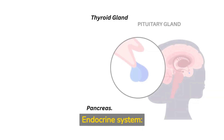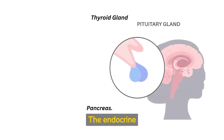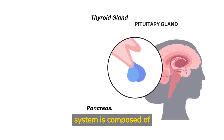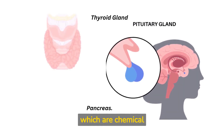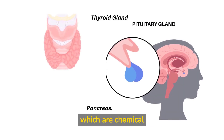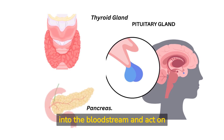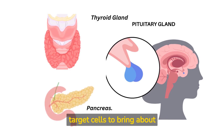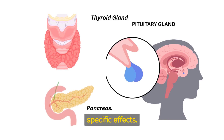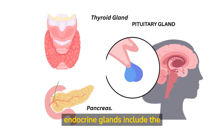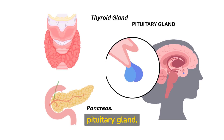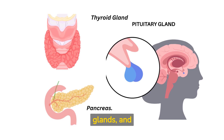The endocrine system is composed of glands that secrete hormones, which are chemical messengers that regulate various bodily functions. Hormones are released into the bloodstream and act on target cells to bring about specific effects. Some of the major endocrine glands include the pituitary gland, thyroid gland, adrenal glands, and pancreas.